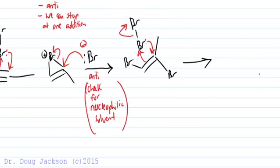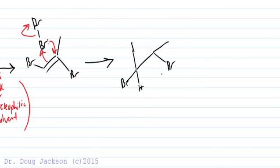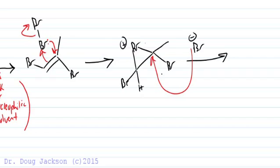Forming a cyclic bromonium again — I'll show the hydrogen just for clarity. We then attack at the Markovnikov position, although it will not affect the final stereochemistry, because there is no final stereochemistry.